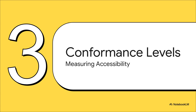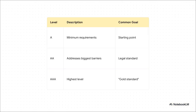So we've got the POUR principles, but how do you actually know if you're hitting the mark? How is this stuff even measured? That brings us to the three levels of conformance. You have Level A, which is the bare minimum — that's your starting point. Then you have Level AAA, which is the gold standard, but honestly it's not always practical or even possible for all types of content. The one you really need to focus on is Level AA. That is the sweet spot. It takes care of the biggest and most common barriers people face, and it's widely considered the legal and industry standard that most organizations are trying to hit.